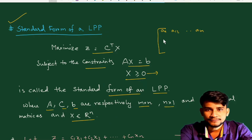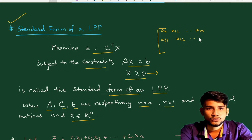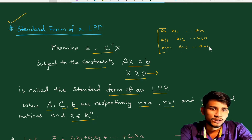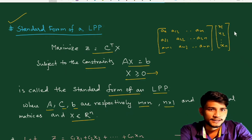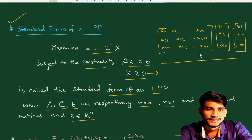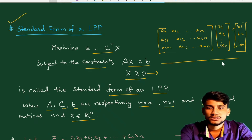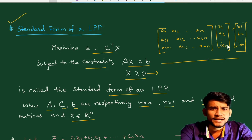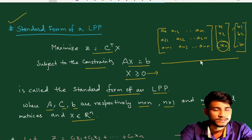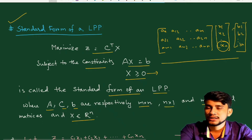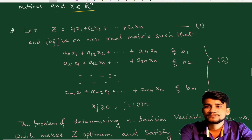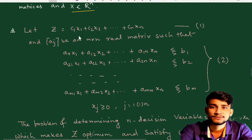So the matrix form looks like: A is an m×n matrix with entries a₁₁, a₁₂, …, aₘₙ; x is the column vector x₁, x₂, …, xₙ; and b is the column vector b₁, b₂, …, bₘ. This is the system Ax = b with x ≥ 0, where there are n decision variables and m equations. This is the standard form of an LPP.